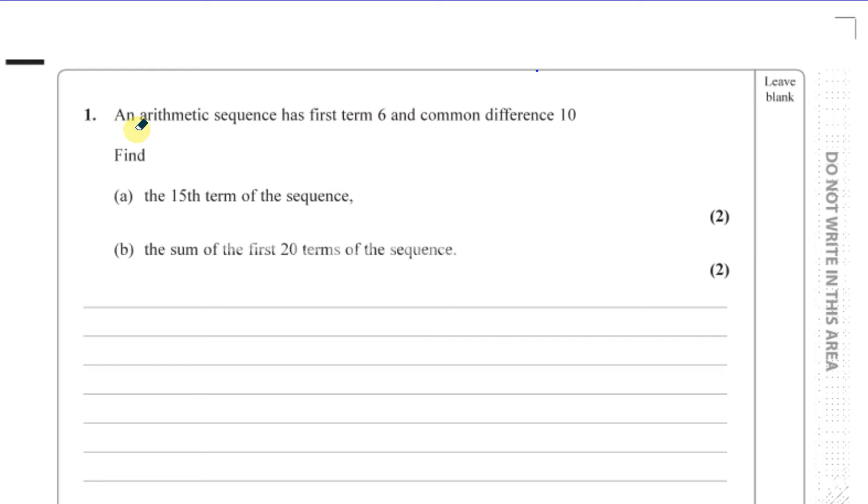We've got an arithmetic sequence has a first term of 6 and a common difference of 10. So the first term of the sequence is 6 and the common difference is 10. It's an arithmetic sequence, so we have to use the formulas for arithmetic sequences.